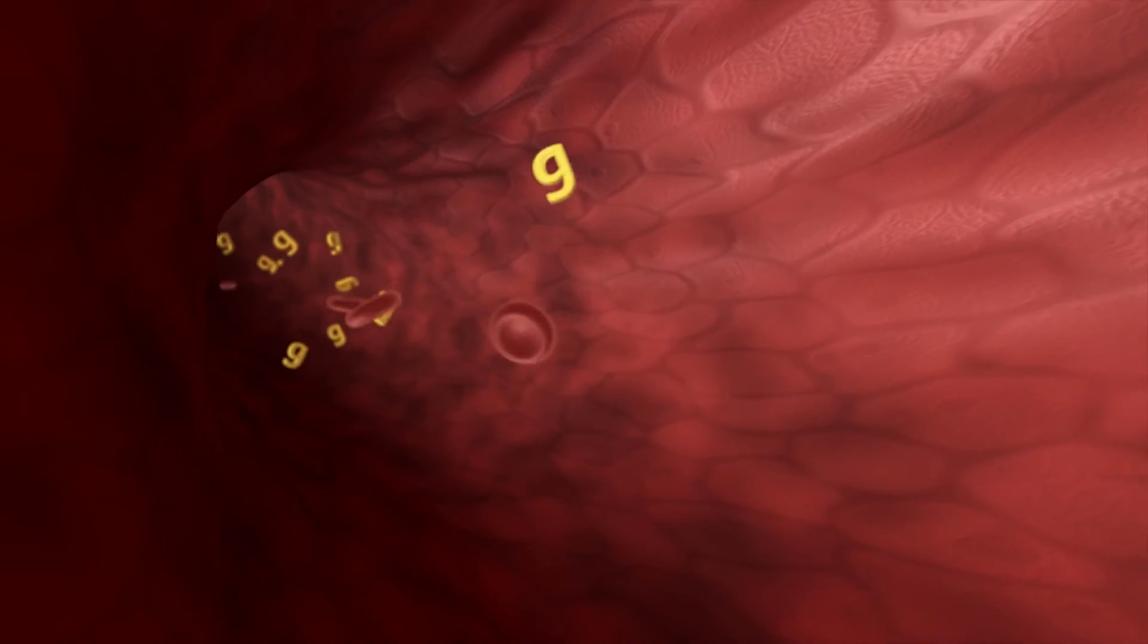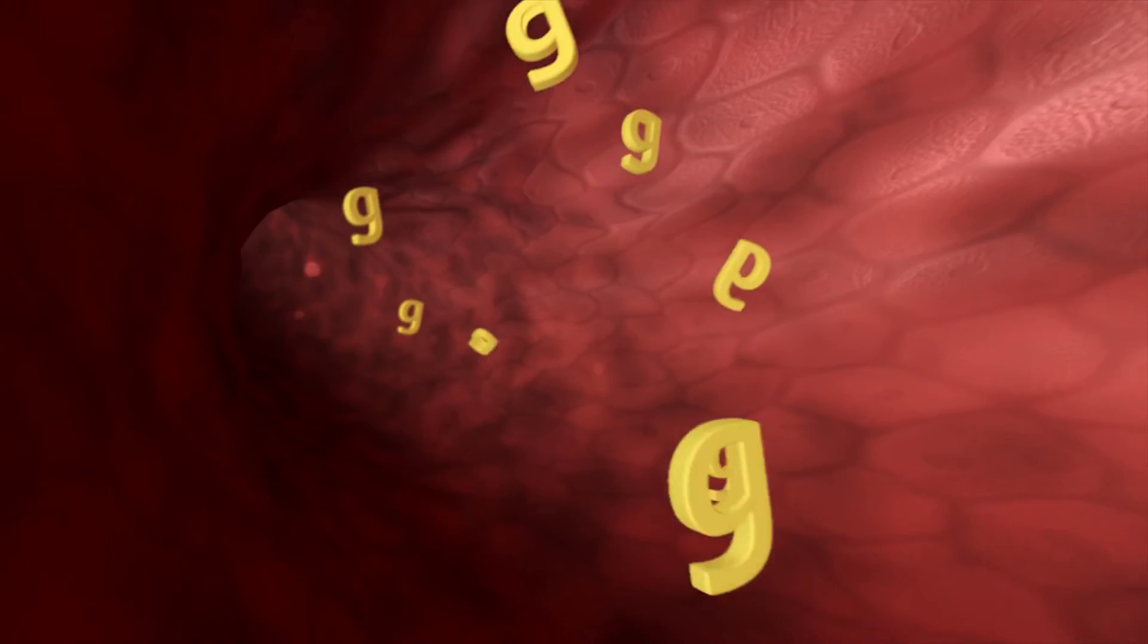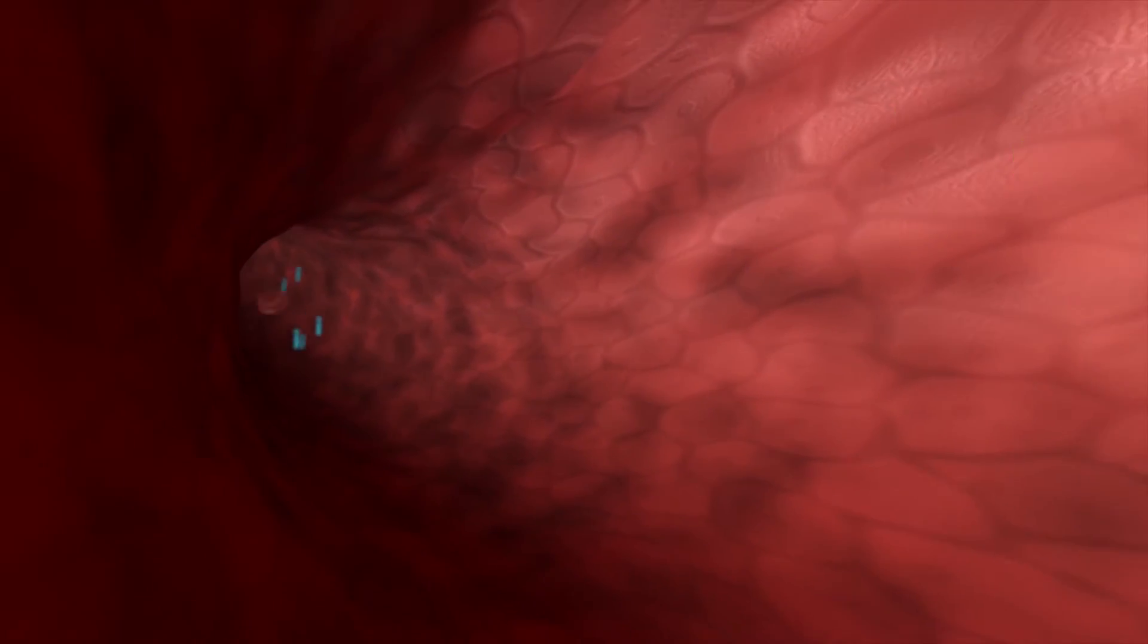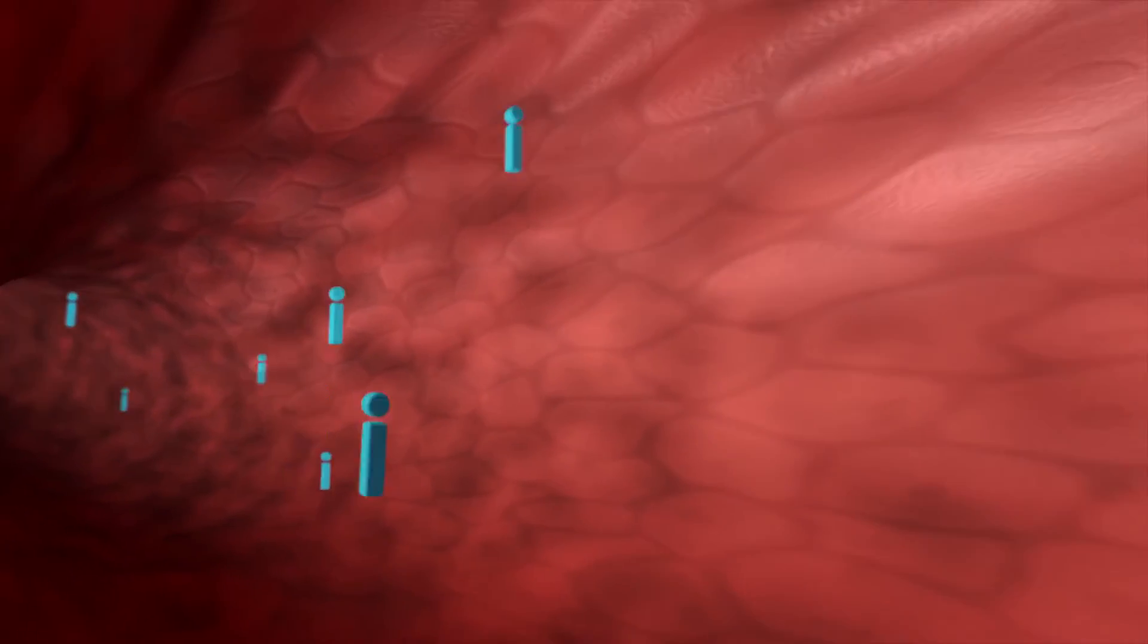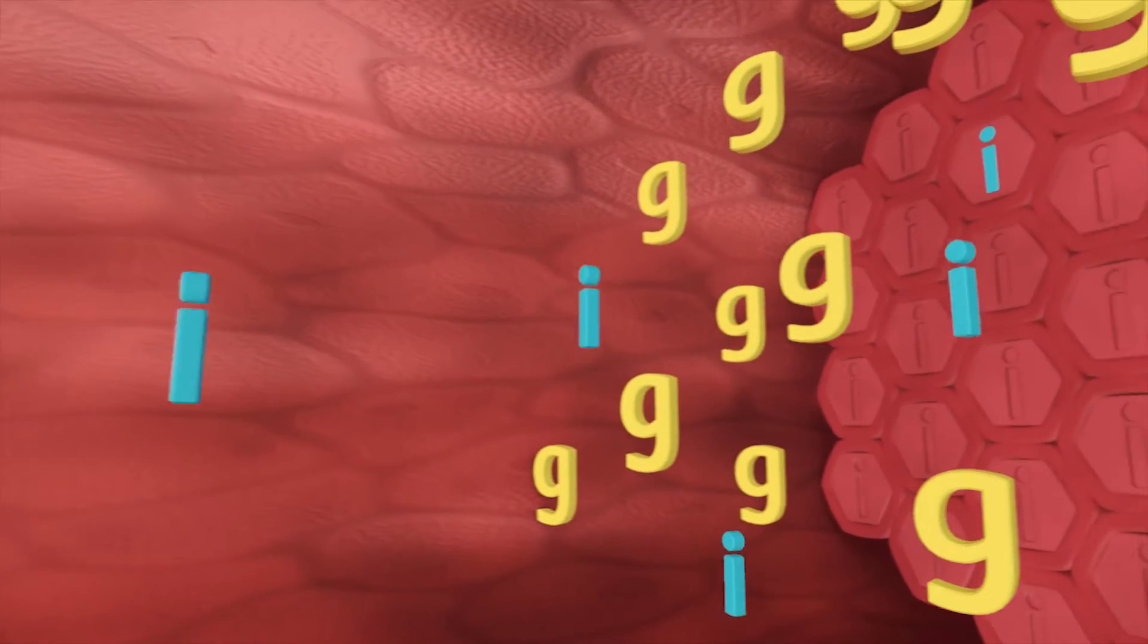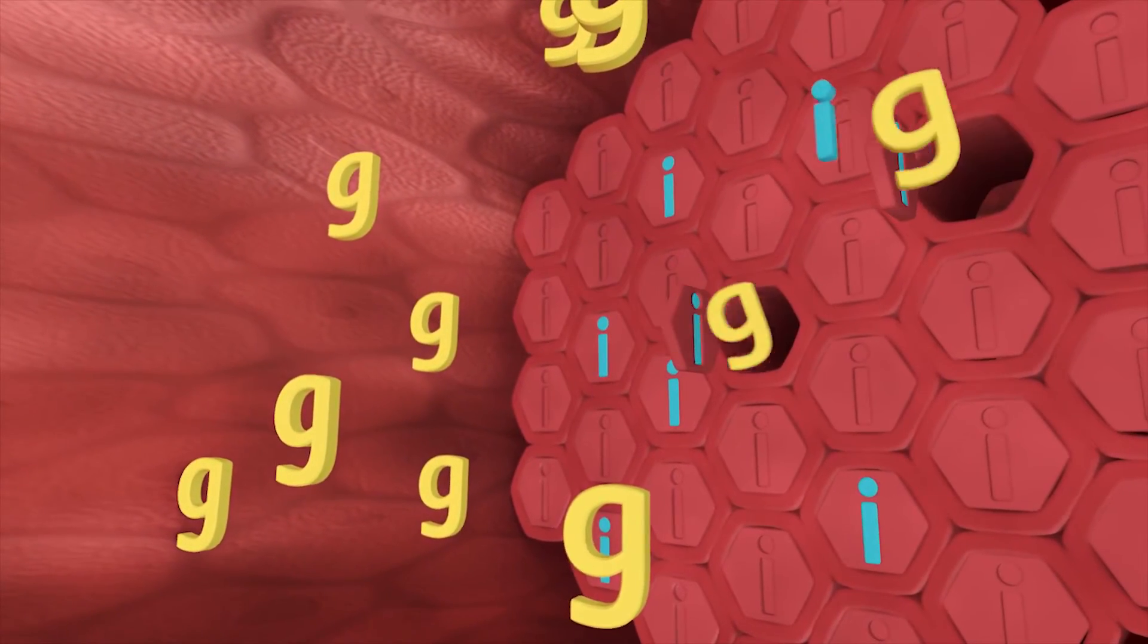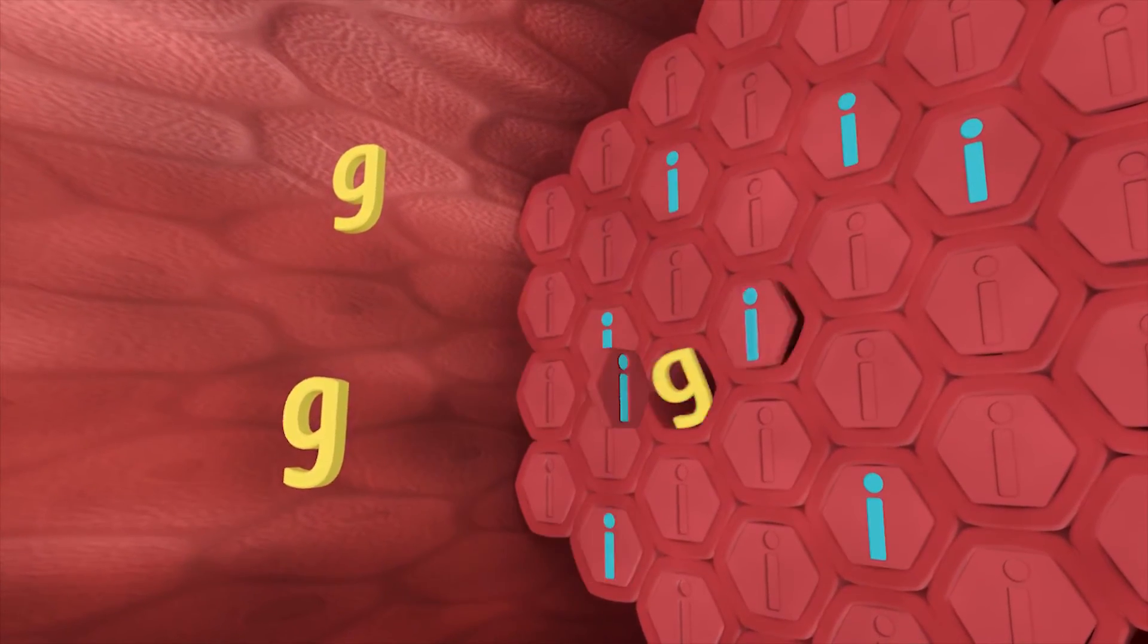Glucose needs to enter the cells in your tissues to be used as fuel. Insulin is a hormone that is made in the pancreas and allows glucose to be transported into your cells. You can think of insulin like a key opening the door to let the glucose into the cell.